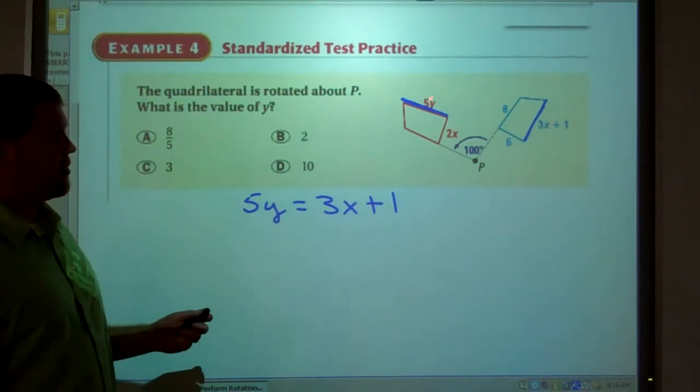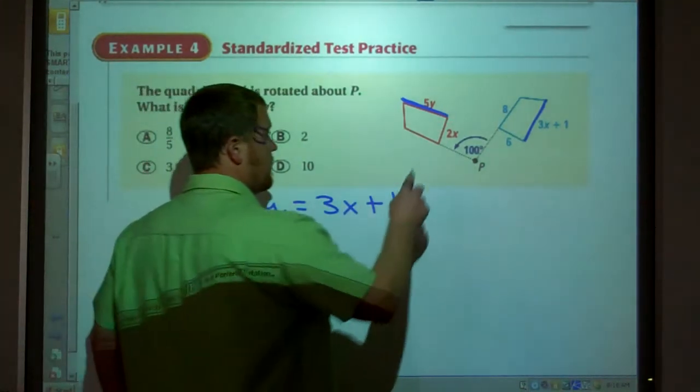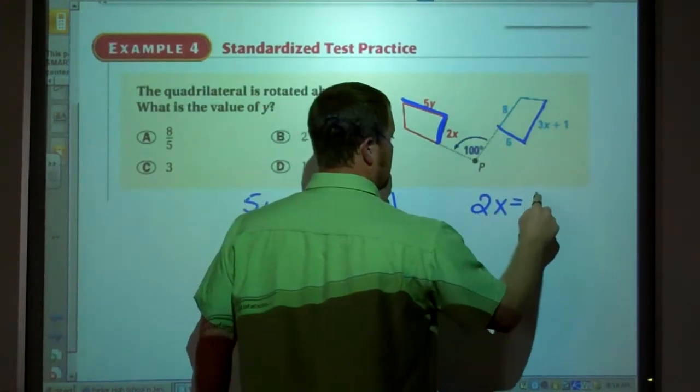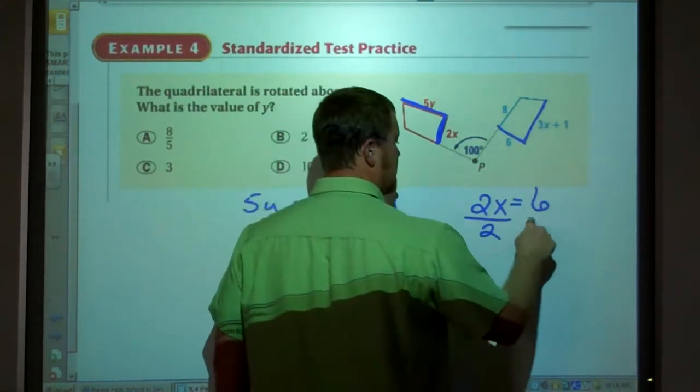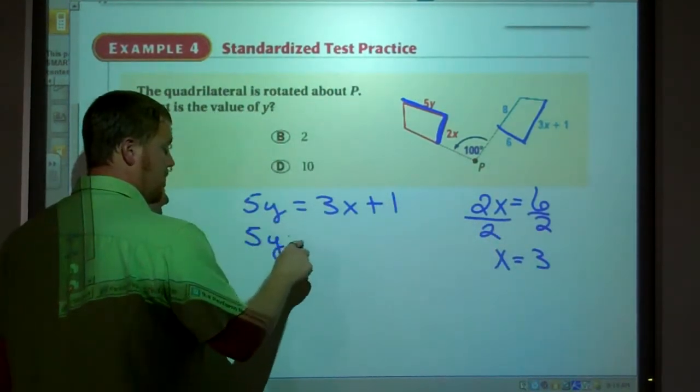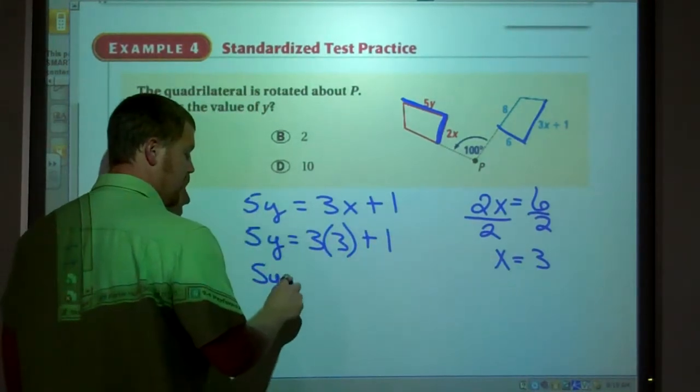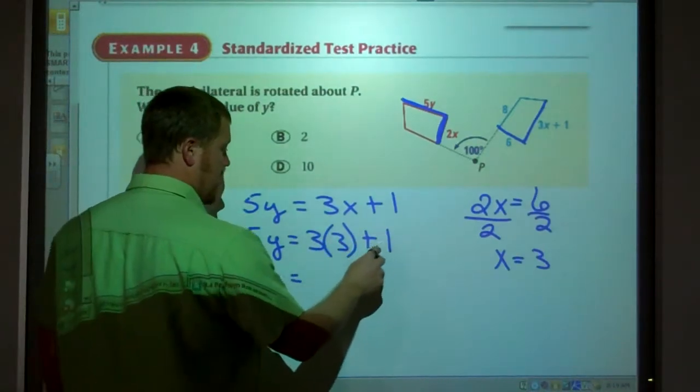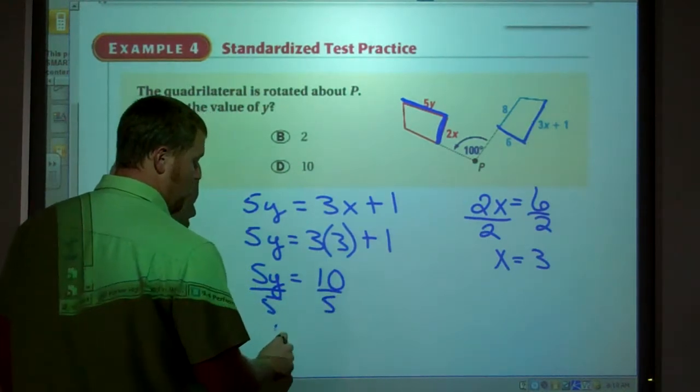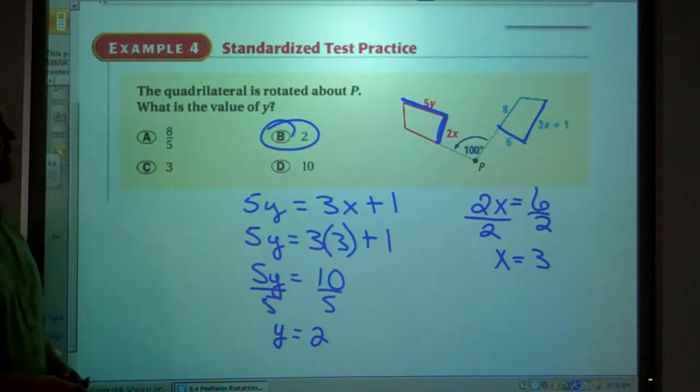So now I look at this diagram. Where's X? Here's X as well. 2X. 2X corresponds with 6. So solve this. X equals 3. So 5Y equals 3 times 3 plus 1. So 5Y equals 3 times 3 is 9 plus 1 is 10. Divide by 5. Y equals 2.